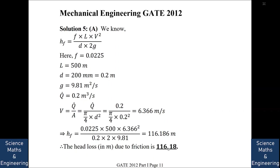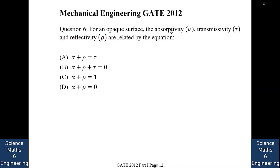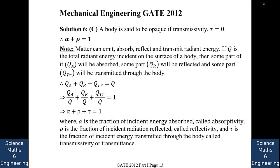For an opaque surface, the relationship between absorptivity, reflectivity, and transmissivity is asked. The answer is C. For an opaque body, transmissivity is zero — the body doesn't transmit any radiant energy. However, it can absorb and reflect, so absorptivity plus reflectivity equals one.